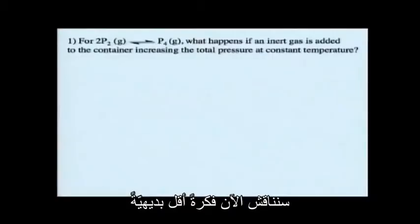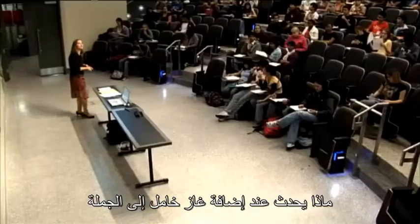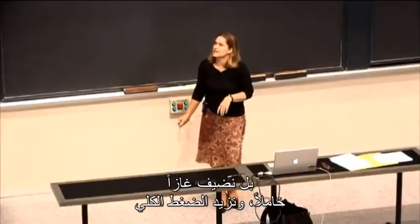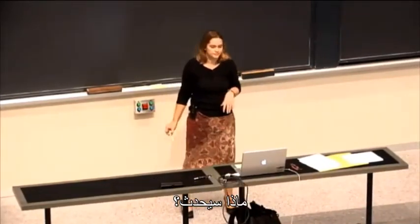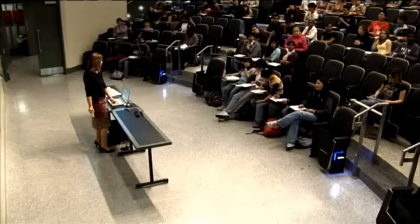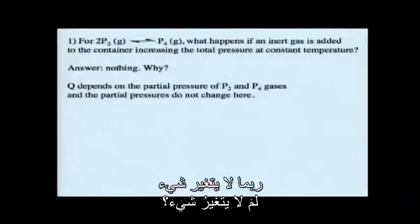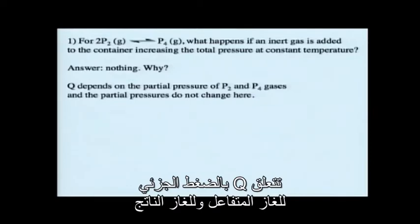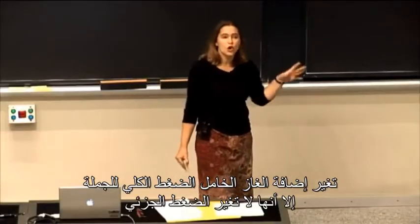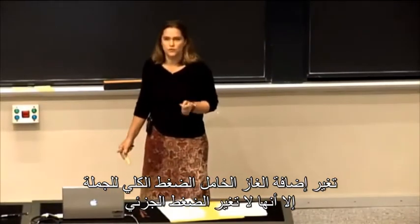Now let's get a little trickier. What happens if we add an inert gas to a system, increasing the total pressure at constant temperature? We're not adding a reactant or product—we're adding an inert gas. Q depends on the partial pressure of the reactant gas and the product gas. In this example, the partial pressures are not changing. We are changing the total pressure by adding an inert gas, but we're not changing the partial pressure.